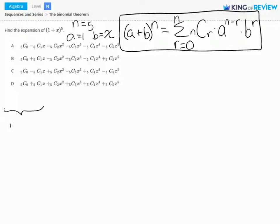When r is equal to 0, we get 5C0 times 1 to the 5 minus 0 power times x to the 0 power. And because we have a sigma notation here, we're using the sum. So we're adding this value to our value when r is equal to 1. So let's set that up.